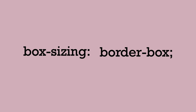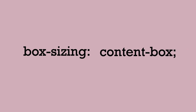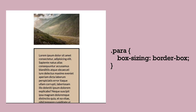This is different from the default of content-box, where the border and padding are not included. So if I wanted to have my paragraph with its padding and border be the same width as the image, I can use box-sizing: border-box to do that.